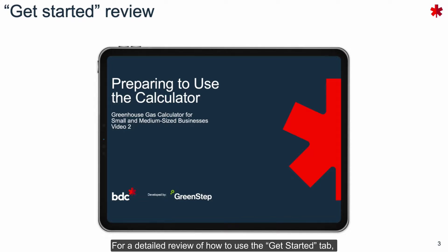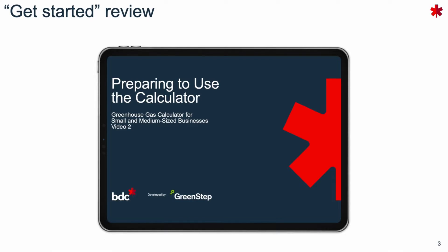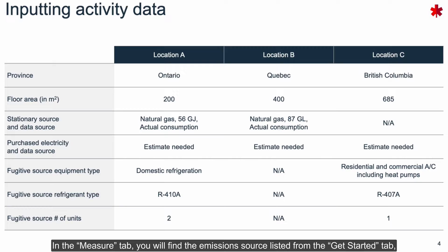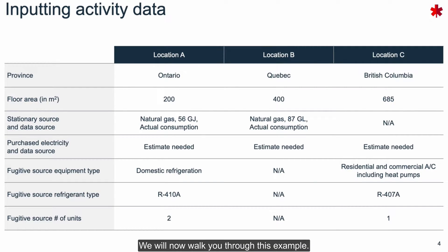For a detailed review of how to use the get started tab please refer to the second video in the series. In that section you will have selected all your emission sources relevant to your business. This is a critical step as it will identify what activities you will need to find data sources for. In the measure tab you will find the emission sources listed from the get started tab along with the type of data required for each. We will now walk you through this example.